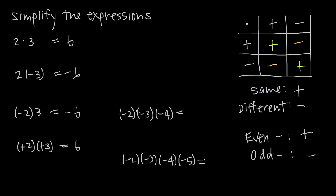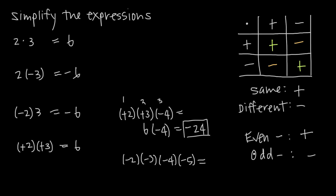We can see why that works with negative 2 times negative 3 times negative 4. We cancel every two negative signs: the first pair becomes positive, leaving one negative sign with no partner. So we get positive 2 times positive 3, which is 6, times negative 4, which gives negative 24. The result was negative because we had 3 negative signs — an odd number.